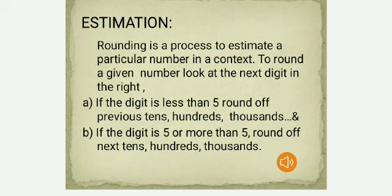Rounding is a process to estimate a particular number in context. To round a given number, look at the next digit to the right. There are two conditions: if the digit is less than 5, round off to the previous tens, hundreds, or thousands. If the digit is 5 or more than 5, round off to the next tens, hundreds, or thousands.